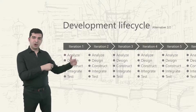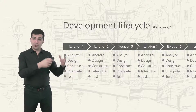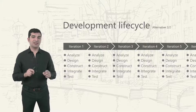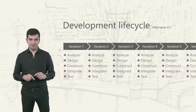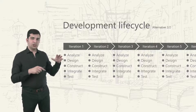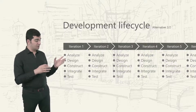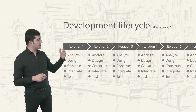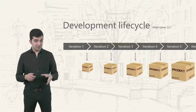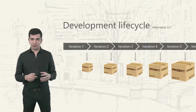We can have these partitions of time and inside each of those partitions we will run the development processes for a subset of features. We just pick a few features for the first iteration and at the end we will create a piece of working software — something that the end users can potentially use.